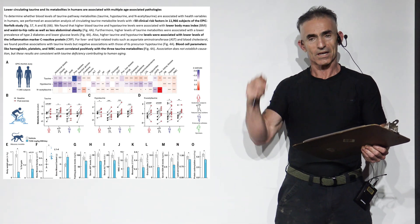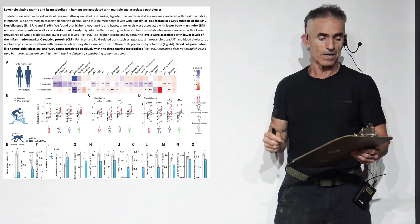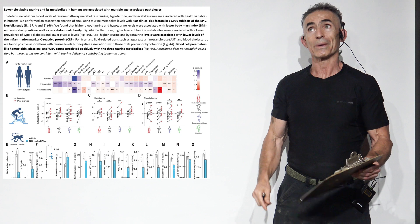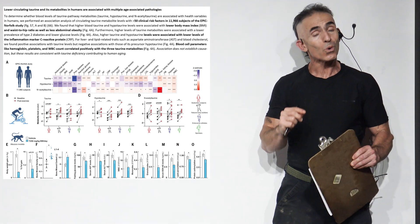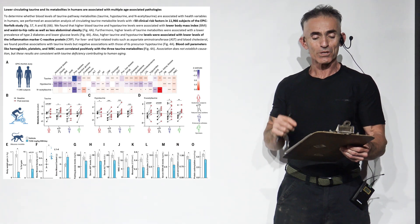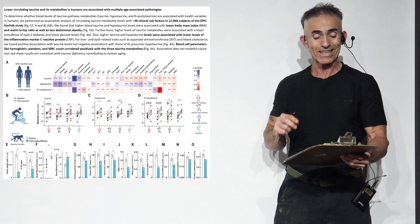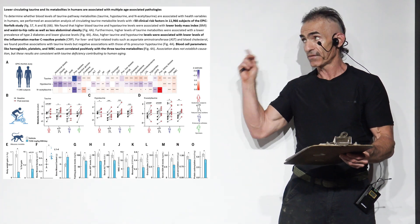That's part of why they're bringing up the study, because there's redundancy. And it's important to have redundancy because we happen to be plagued by what's called p-hacking in a lot of studies. We found that higher blood taurine and hypotaurine levels were associated with lower BMI and waist-to-hip ratio as well as less abdominal obesity.